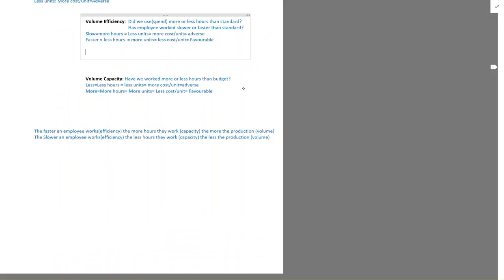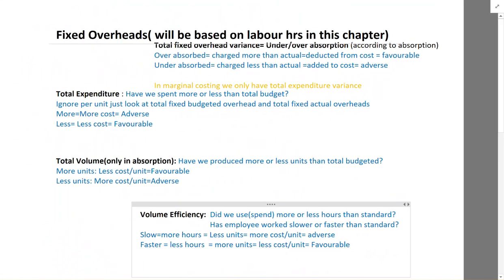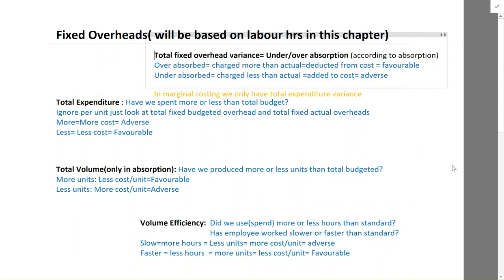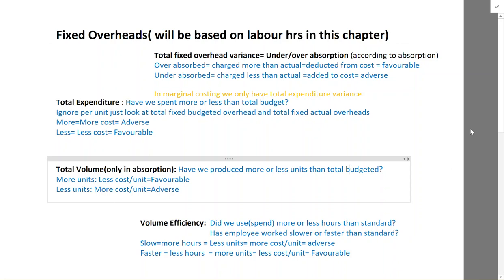Next, we have fixed overheads variance. Fixed overheads in variance analysis will be based on labor hours — variable overheads and fixed overheads both will be based on labor hours, and they will give you a rate per hour meaning labor hours. In total, we have under- or over-absorption. From absorption costing, you will remember we calculate under- or over-absorption, which is when absorbed overheads is more or less than actual. Absorbed is based on budget. So when our total budget is different from actual, we call it under- or over-absorption. That is the total fixed overheads variance.